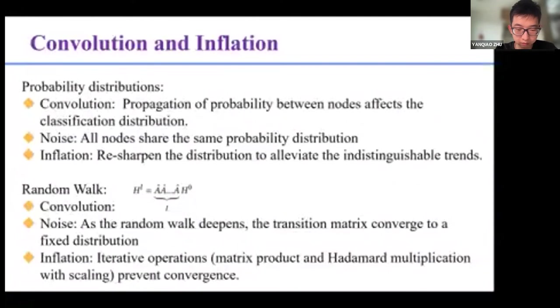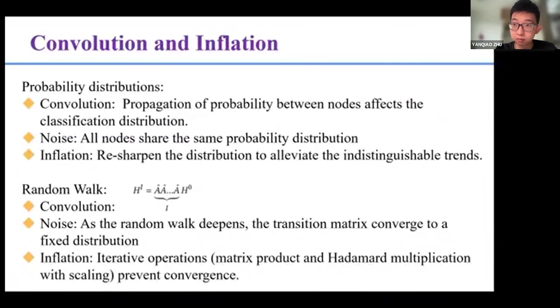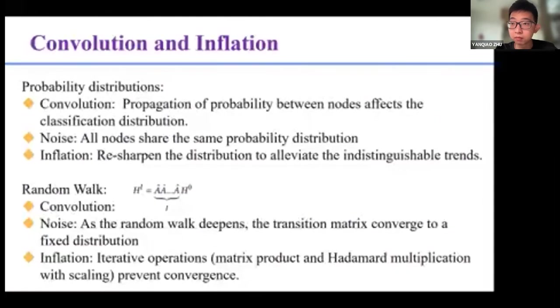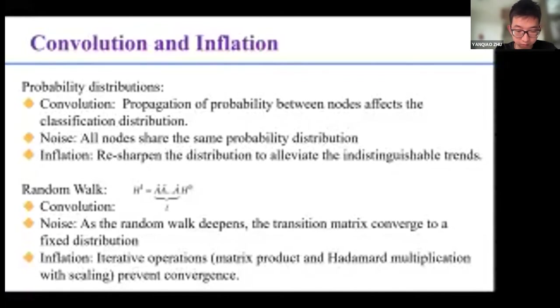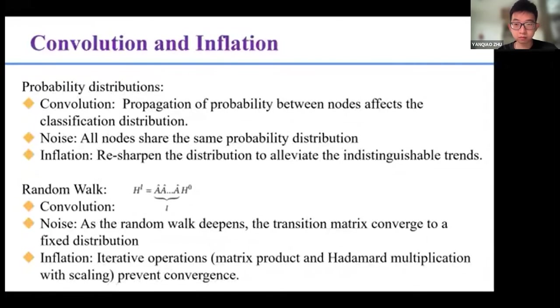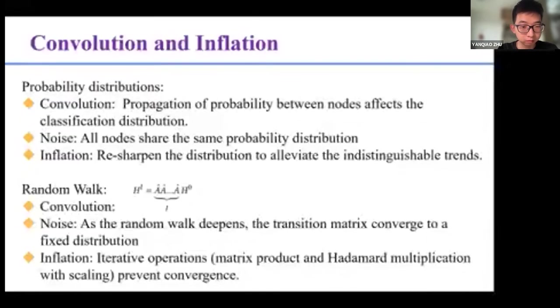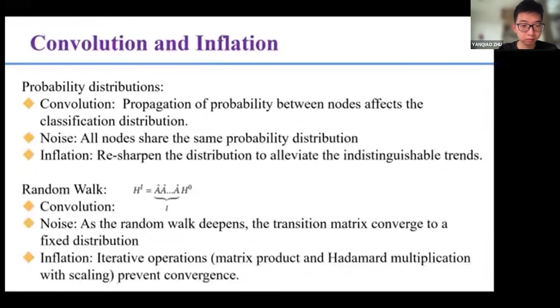If we analyze this problem from the perspective of random walk, it is easy to find that as the random walk deepens, the transition matrix of each layer will converge to a fixed distribution because of the limit of matrix calculation as the MCL shows. Inflation layers change the smoothing procedure of the self-multiplication to an iterative process of a matrix product and Hadamard multiplication with scaling. And thus, it can avoid the convergence.